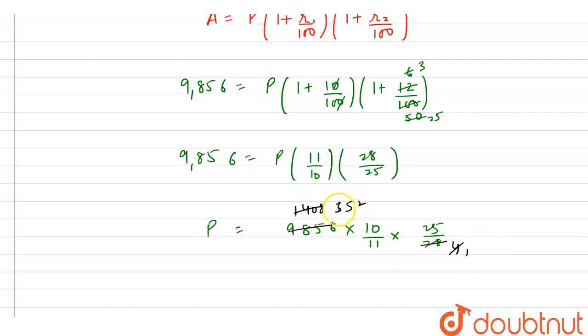Now here this 352 gets cancelled with this 11, here this gets cancelled at 32, so we can say that our P equals 32 into 25, that is 800.